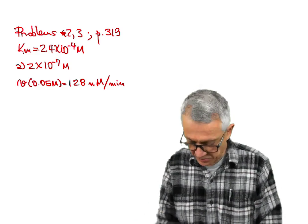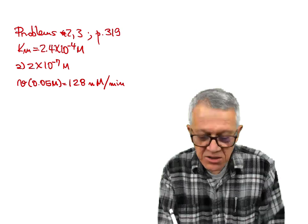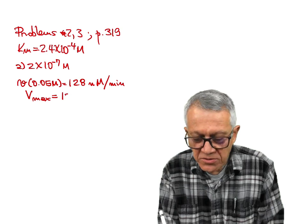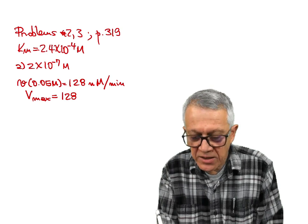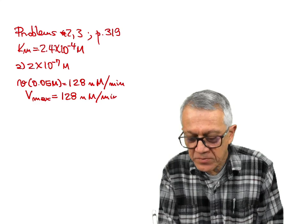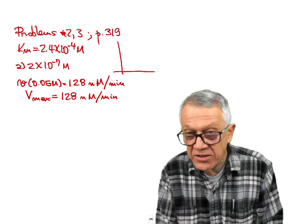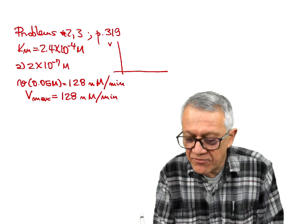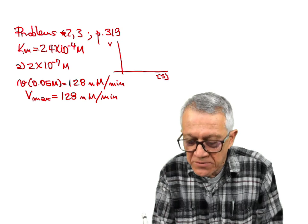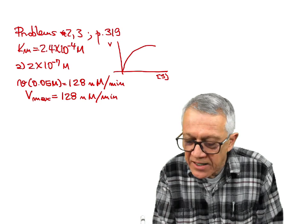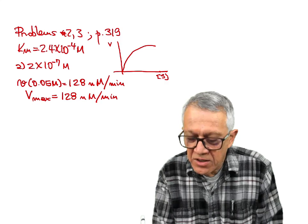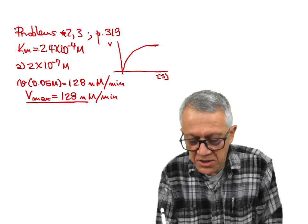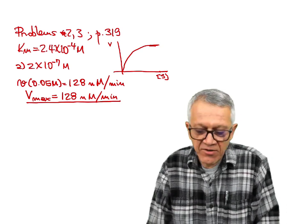What this problem is telling us is that this is the Vmax. When the concentration is very high, Vmax equals 128 nanomoles per minute. We remember that these reactions look like a curve on a plot of velocity versus substrate concentration, and when we are at a very high concentration of substrate, we are reaching very close to the Vmax. So we can use this number to give us the Vmax for this reaction.